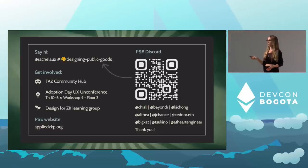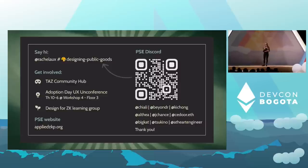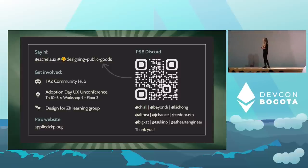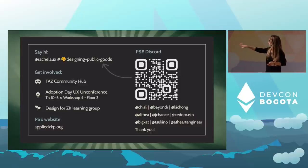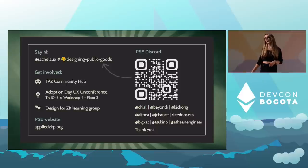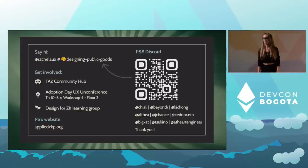The QR code goes to our PSE Discord where you can find all of us. My handle is in the top left, and we started a designing-for-public-goods channel — if this content resonates with you, please join and start a conversation. If you want to get involved this week, the Temporary Anonymous Zone community hub is downstairs on the first floor, and on Thursday from 10 to 6 there's the Adoption Day UX Unconference with ZK design lightning talks and discussion groups later in the day. We also want to start learning groups for people designing in this space — we'll keep you updated in our channel on the PSE Discord. Thank you!